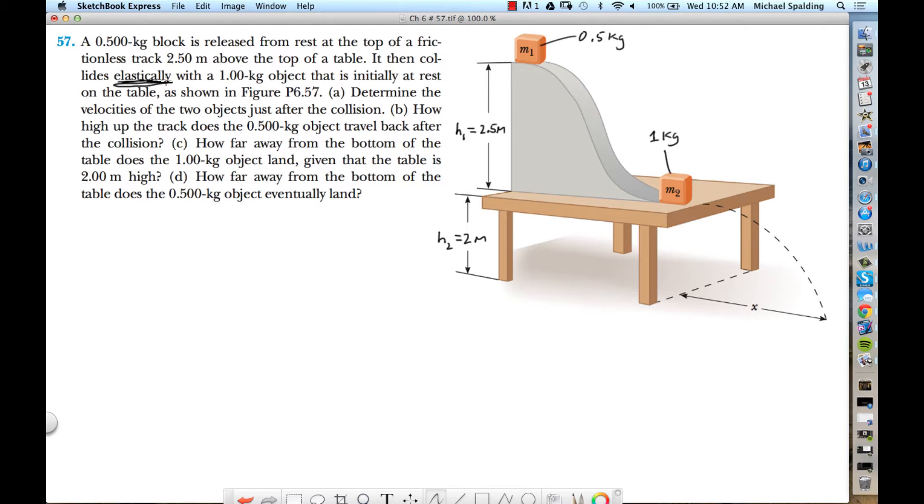Not only is momentum conserved, because momentum is always conserved in collisions, but if you see the word elastic, that means that something else is conserved: kinetic energy. And whenever you have an elastic problem, there's going to be two unknowns, so you need two equations. So first, we need to figure out when block number one goes down the hill, what is its velocity right before collision?